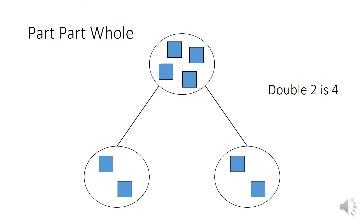Today we're going to be looking at representing doubles. On my screen I've got my part-part-whole, just like we've looked at in place value. We can use this part-part-whole to represent our doubles. In the first circle I've got two squares, in the second circle I've made my second amount — another two squares. Then in the top circle I've put those two lots of two together to find my double. So double two is four.